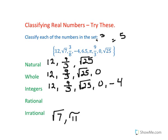And the rational numbers are everything else. So we have 12, we have 3 over 8, negative 4, 6.5 which can also be written as a fraction, 9 over 3, 0, and square root of 25.